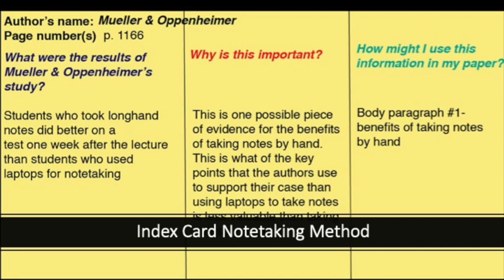Many people find it helpful to put each key note on an index card. This allows you to group related information from all of your articles together to see what information you will use in each paragraph of your paper. Here's an example of what an index card might look like. You'll notice that the author's names and the page number are included — you'll need this information for your citation.